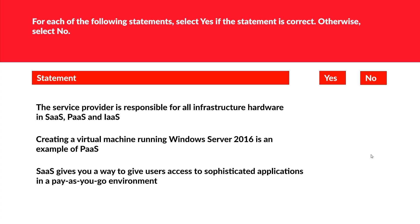The next question is yes or no. The service provider is responsible for all infrastructure hardware in SaaS, PaaS, and IaaS — yes, this is true. Creating a virtual machine running Windows Server 2016 is an example of PaaS — no, this is absolutely wrong; this is an example of Infrastructure as a Service. SaaS gives you a way to provide users access to sophisticated applications in a pay-as-you-go environment — yes, this is correct, because SaaS does this.